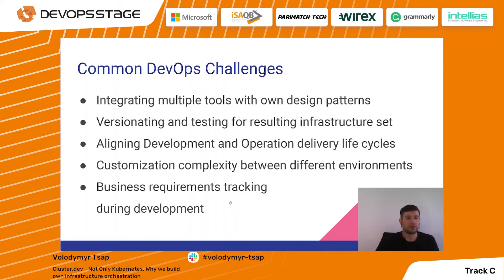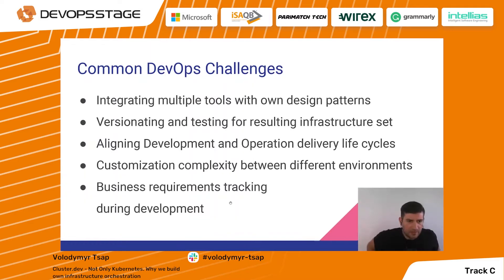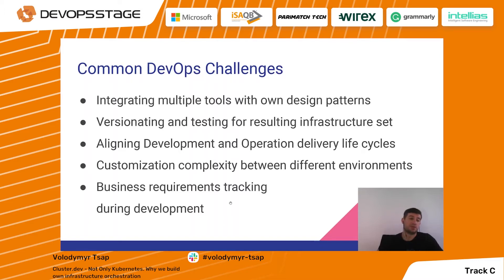We also have the challenge that we need to align development and operations delivery life cycles, which could be different. Most of the companies we work for are software-as-a-service vendors, so they deliver their own product along with their own infrastructure. When you buy something as SaaS, you're buying not only software but the part of the infrastructure running it. Aligning the development and operations delivery process can be quite tricky.